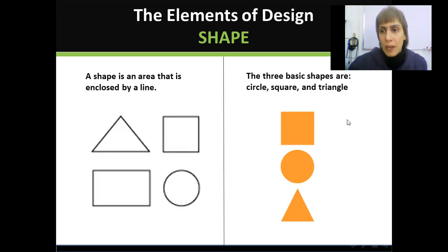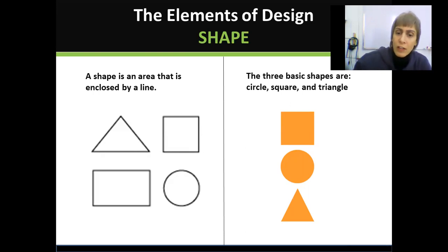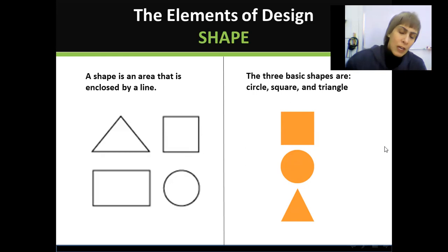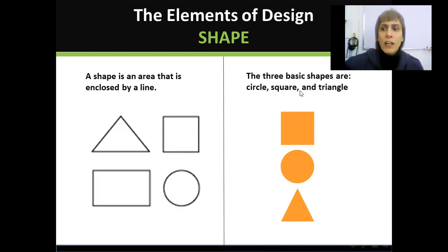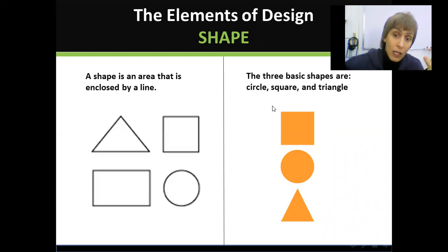The three very basic shapes are the square, the circle, and the triangle. Any other shape that you see, which can be complicated — very complicated shapes — they are made from these three basic shapes. Any shape, any design you see in this world that has shapes, the starting point is these three shapes.